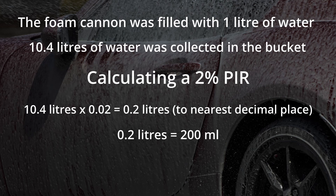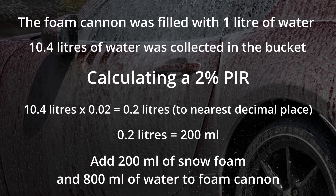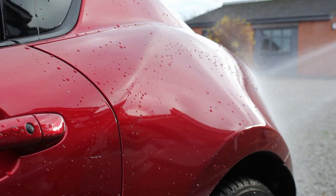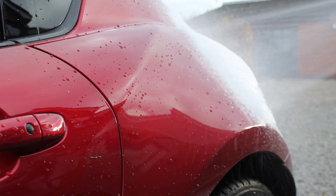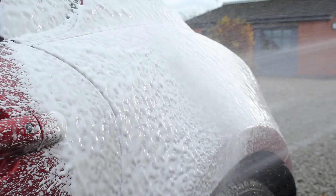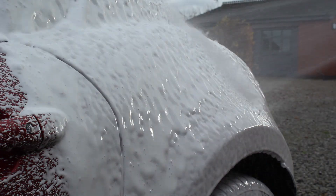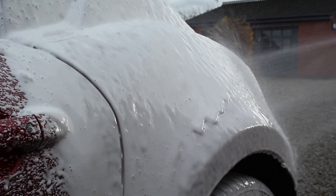In this example, two percent of 10.4 liters works out as 0.2 liters, or 200ml. So the amount of snow foam you'd need to add to the foam cannon is 200ml, then top it up to the one liter mark with 800ml of water. Out the end of that foam cannon you'd be getting a two percent panel impact ratio.